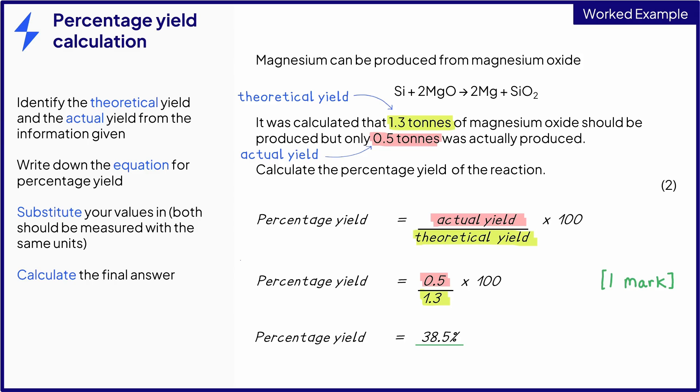You will be awarded one mark for the correct use of the equation, and one mark for the correct final answer. Think carefully about the answer that you get. Remember, the value cannot be greater than 100%. So if your value is greater than that, make sure you haven't divided the theoretical yield by the actual yield. This is the most common error examiners see with this type of calculation.